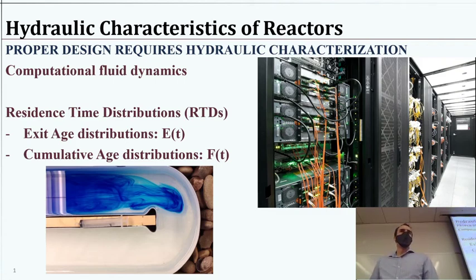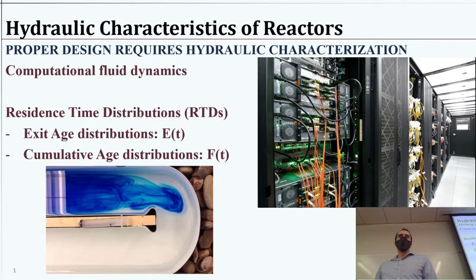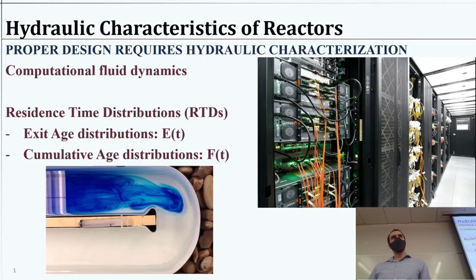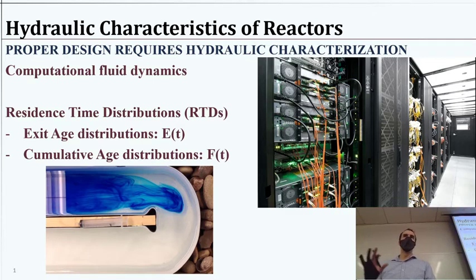We'll go ahead and get started. Probably have a couple more people filter in. So last time we talked about reactions in reactors, took a look at mass balances, and talked about how to put in the reaction term into a mass balance with a reactor. We also talked about how to derive the kinetics of a reaction given a batch reactor, or a more complicated reactor if you have good knowledge of the flow. You could still solve for the K, for example.